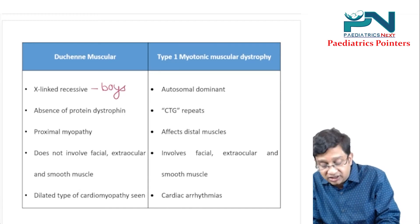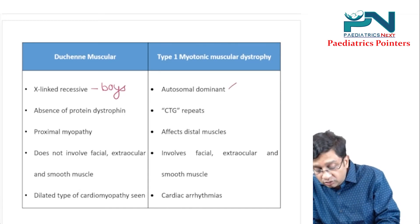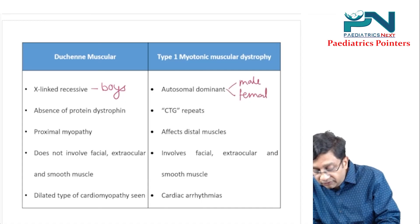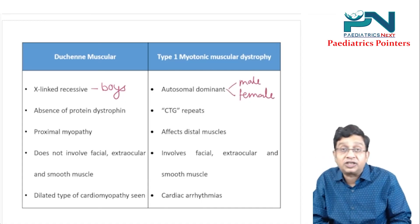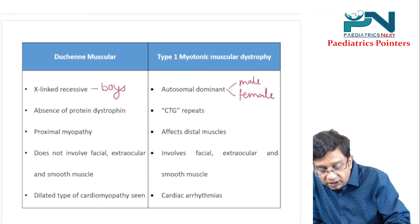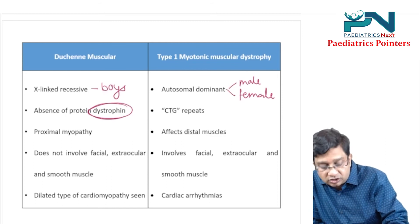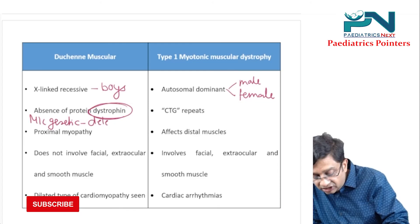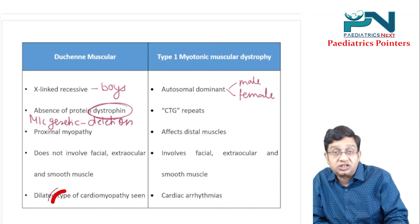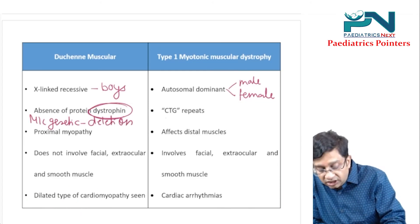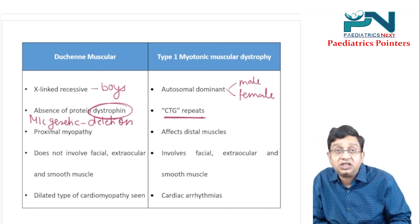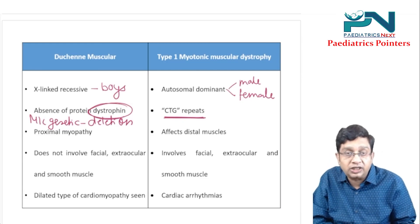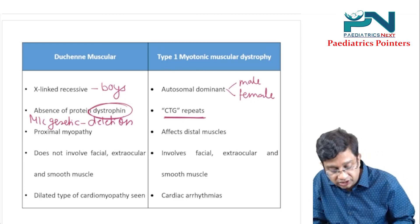Myotonic muscular dystrophy type 1 is autosomal dominant, so both males and females can be affected. In Duchenne, there is absence of the protein dystrophin, and the most common genetic change is a deletion. In myotonic dystrophy, there are CTG trinucleotide repeat mutations.